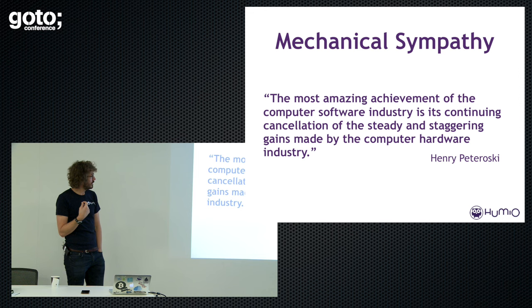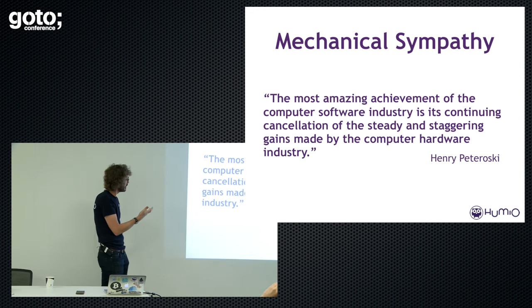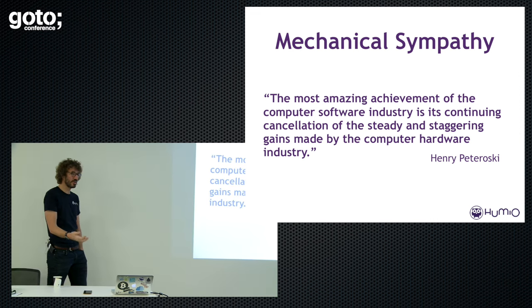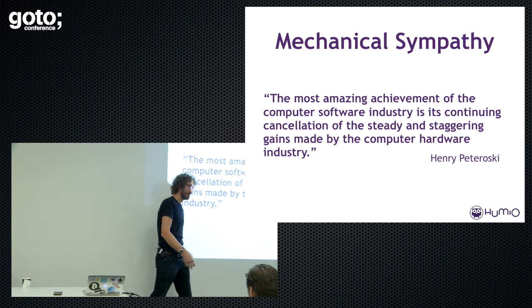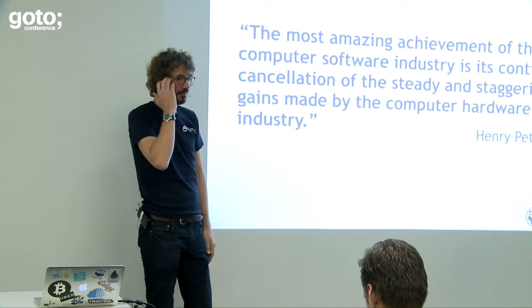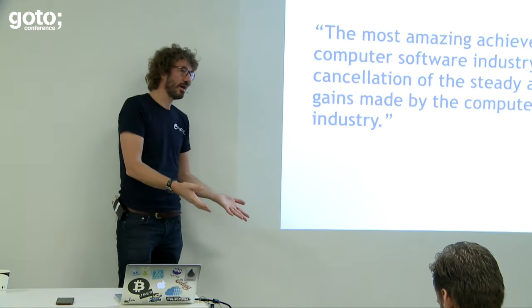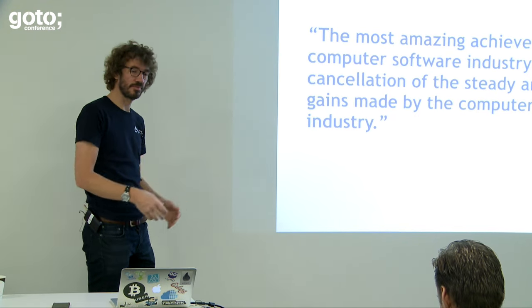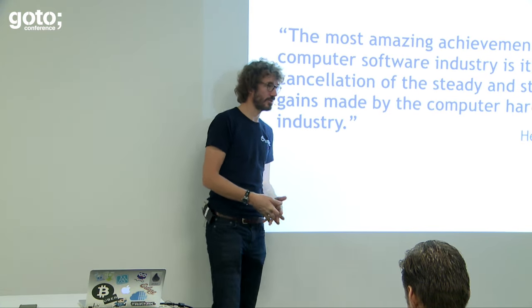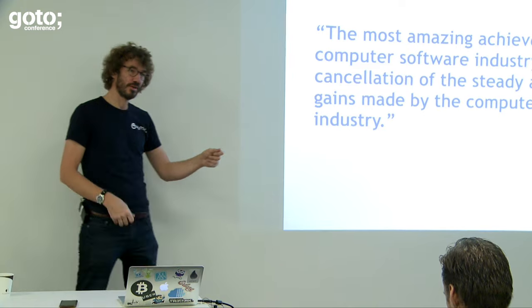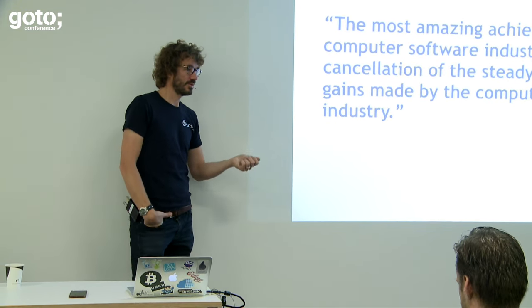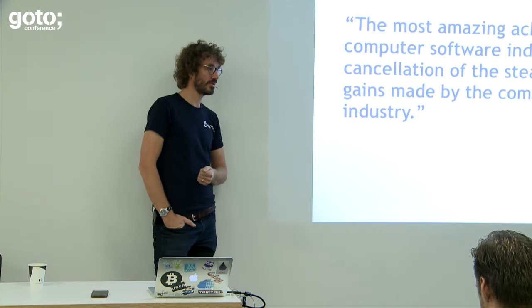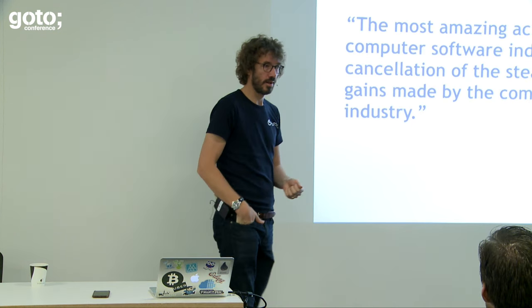There's an interesting quote: 'The most amazing achievement of the computer software industry is its continuing cancellation of the steady and staggering gains made by the computer hardware industry.' Especially in the last 10 years we've been building distributed scale-out systems and really not caring about the hardware, since hardware is cheap enough to throw more at the problem. But sometimes this gets totally ridiculous: if you do things right, you can save an order of magnitude on systems. With Humio, you can turn five or ten servers into one.